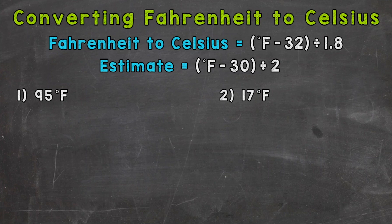The formula we're going to use is at the top of the screen. We take the degrees Fahrenheit that we're given and subtract 32, then divide by 1 and 8 tenths, or 1.8. I also added an estimation formula at the top of the screen. This estimation formula can be used to find an approximate conversion using mental math. I'll go through the exact conversions and then how to estimate.